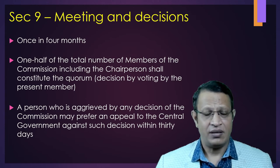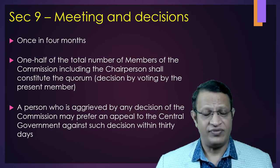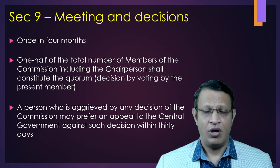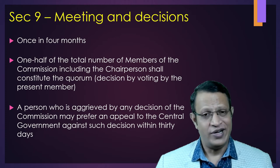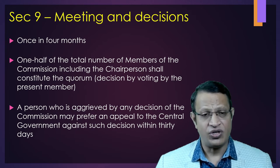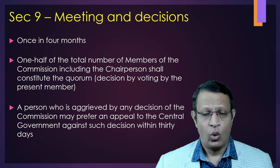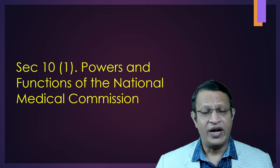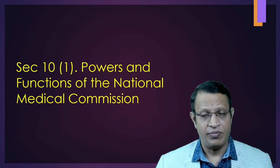Section 9 talks about meetings and decisions. The NMC will meet at least once in four months, and 50 percent of the total number of members along with the chairperson shall form the quorum. Decisions will be based on voting. A person aggrieved by any decision of the NMC can prefer an appeal to the central government within 30 days.